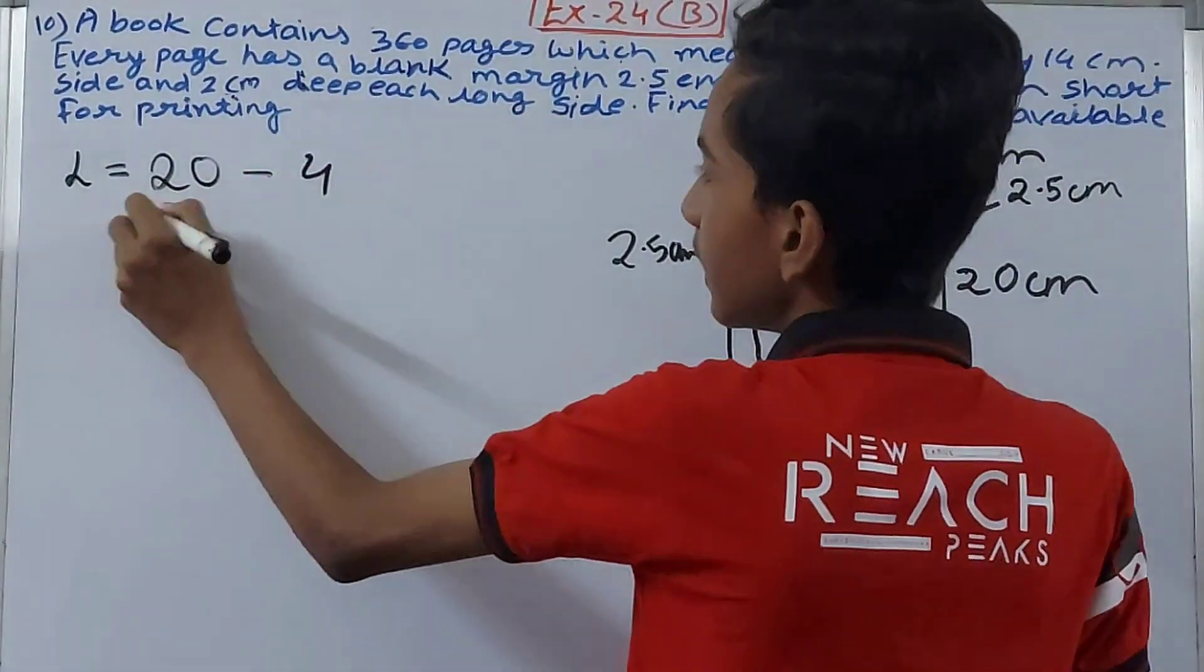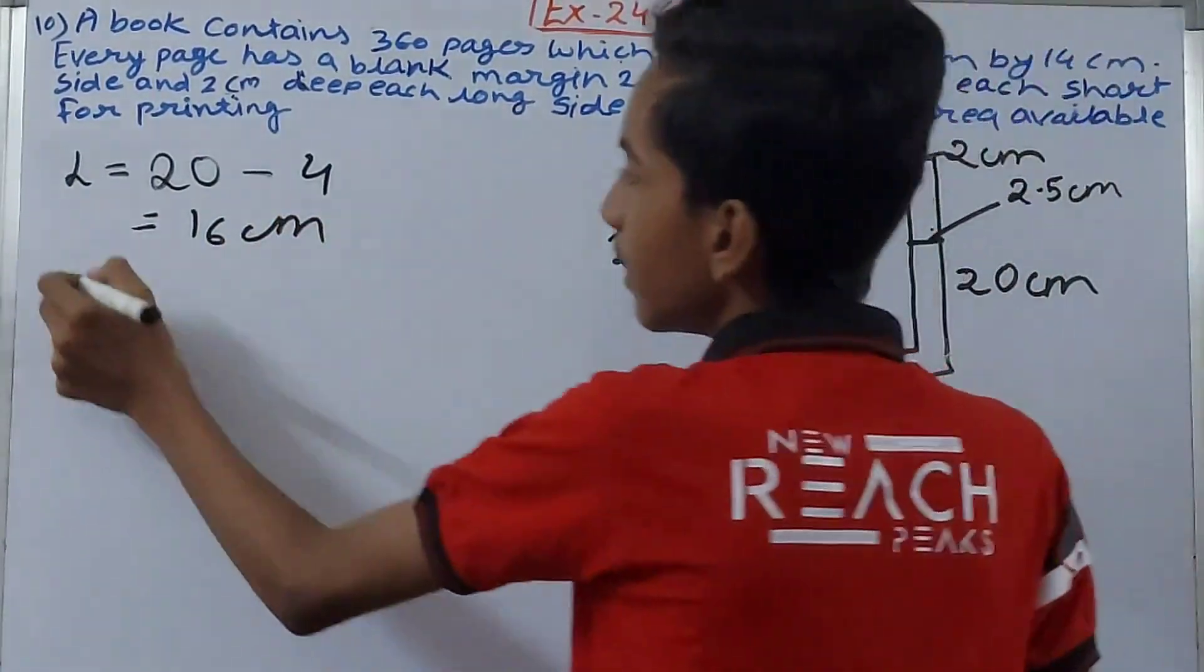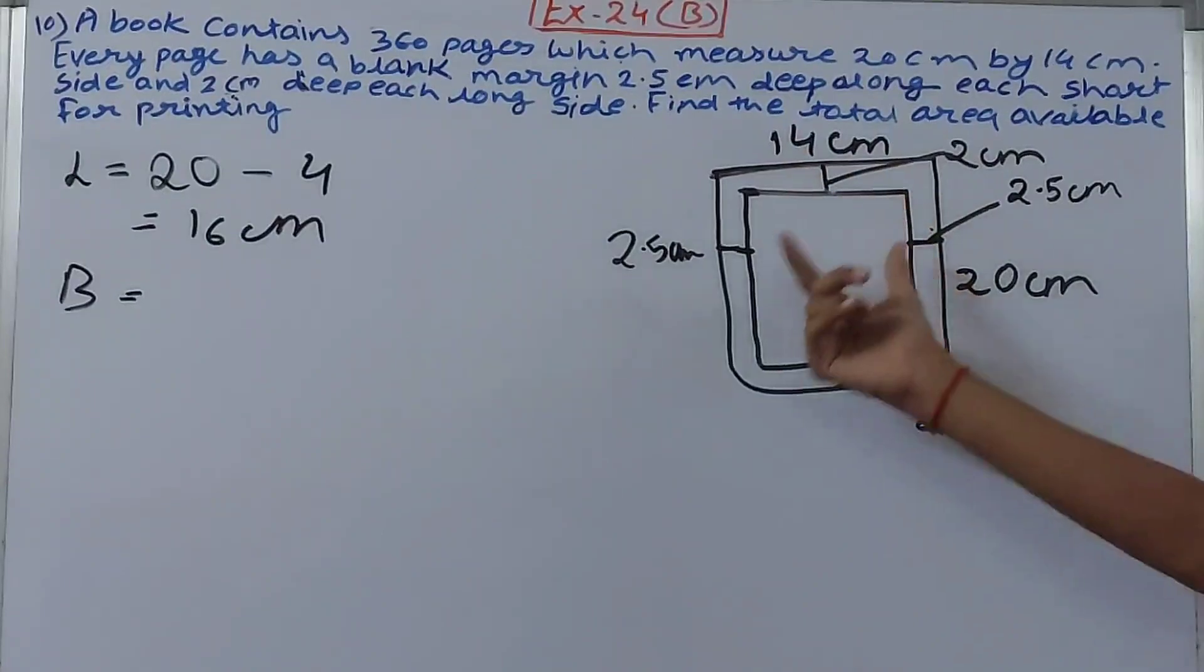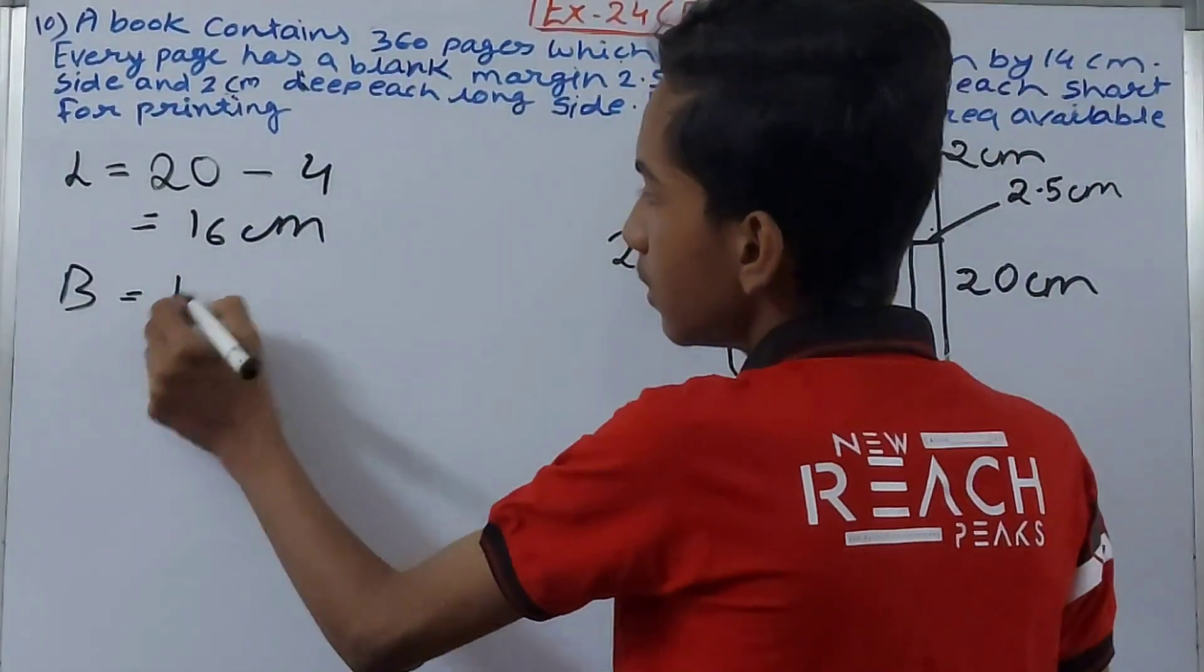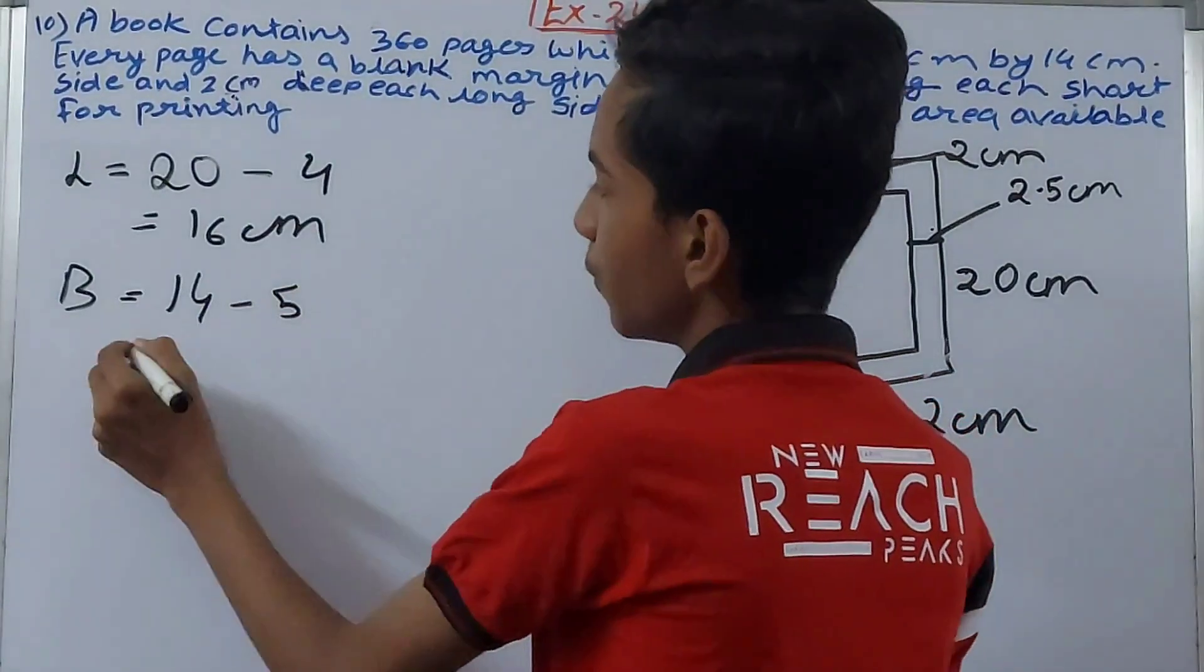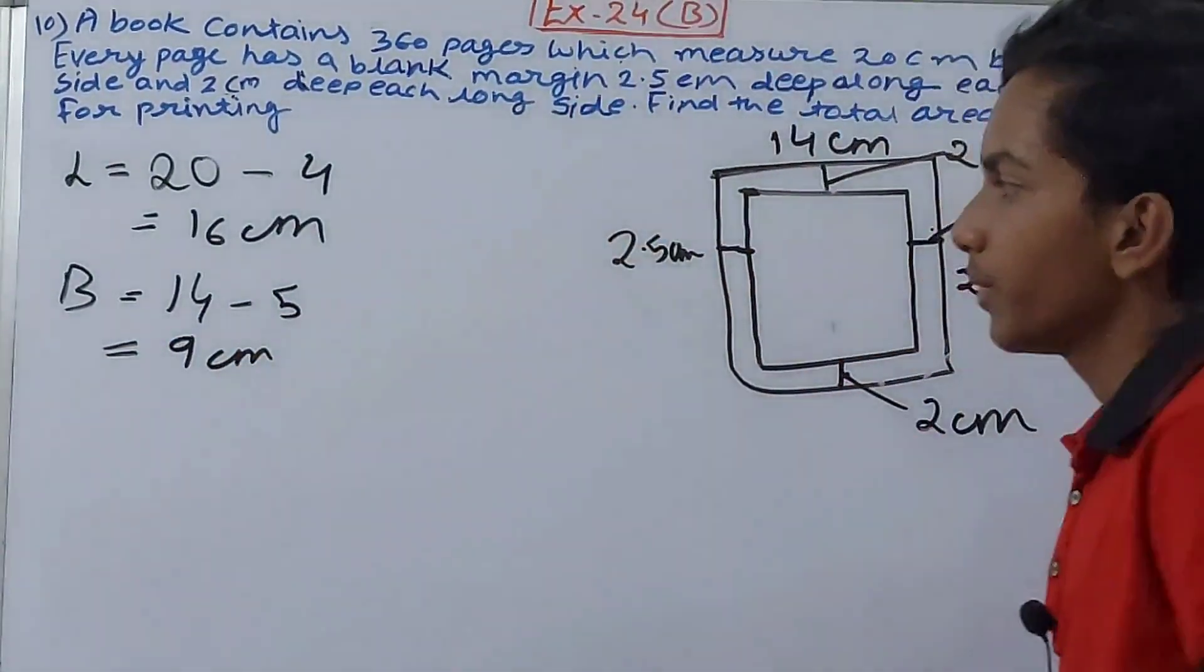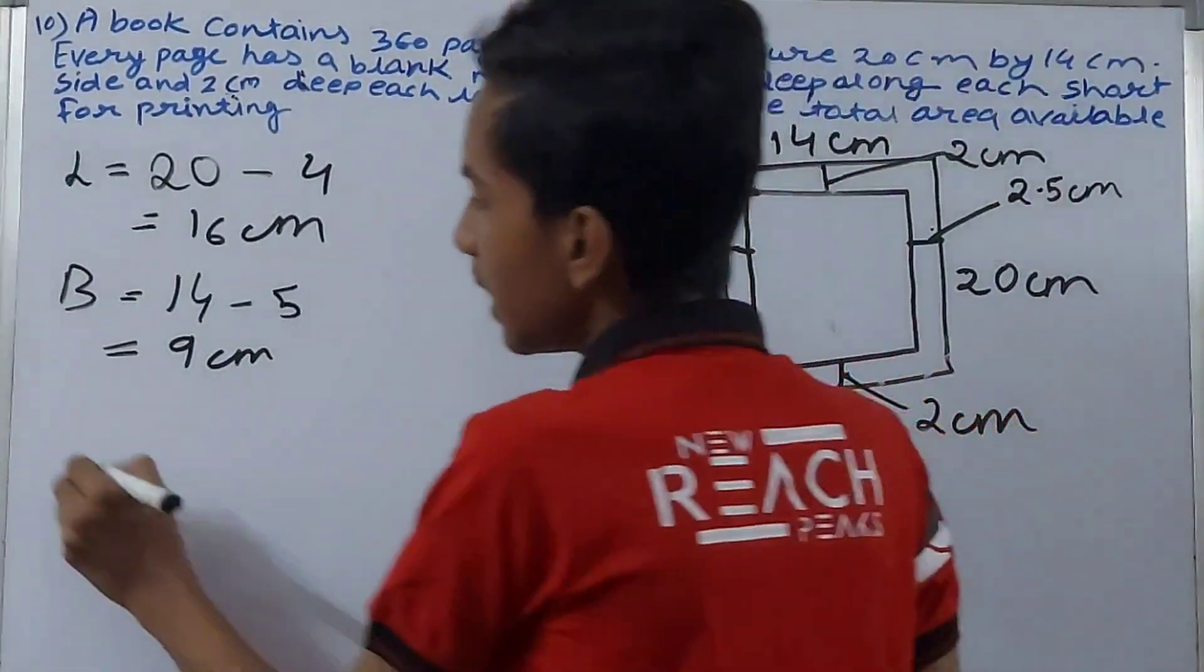And then the new breadth becomes what? Breadth here is 14, here it's 2.5 and 2.5. So 14 minus, 2.5 and 2.5 we can simply write as 5 as well, so 14 minus 5, it comes 9 centimeters. Right.